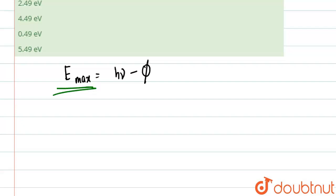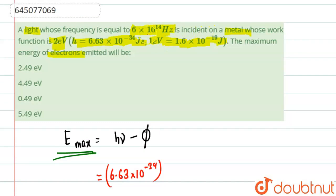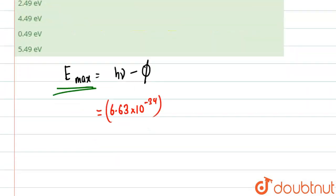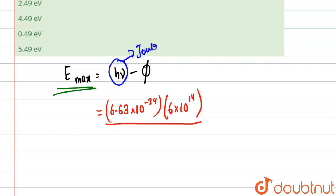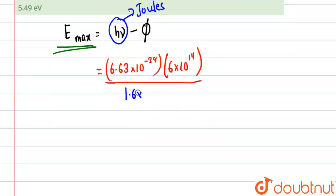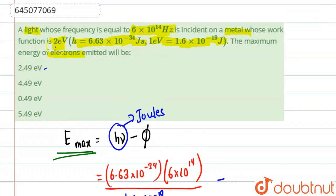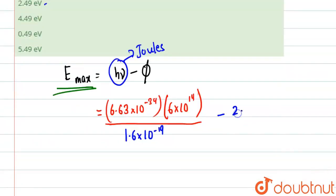So we need to find E_max. We will write everything in the equation: 6.63 x 10 to the power minus 34 — this is Planck's constant — multiplied by the frequency 6 x 10 to the power 14 hertz. This will come in joules. But since the answers are given in electron volt, we divide by the electronic charge, 1.6 x 10 to the power minus 19, to convert into electron volt. And phi is already given as 2 electron volt, so we just subtract 2 electron volt.